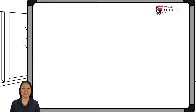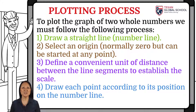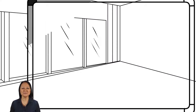To plot the graph of whole numbers, we must draw a straight line called a number line. Next, we select an origin — typically 0, but it can be started at any point. We define a convenient unit of distance between the line segments to establish the scale according to the points. Finally, we draw each point according to its position on the number line.